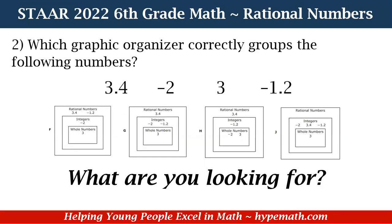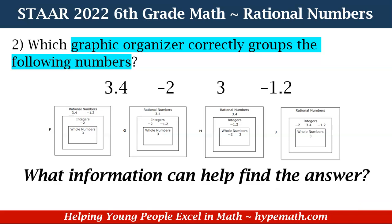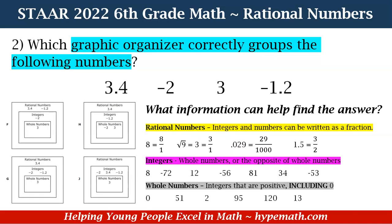What's our most important question? What are we looking for? We are looking for the graphic organizer that correctly groups 3.4, negative 2, 3, and negative 1.2. What information can help us find the answer? Understanding what rational numbers, integers, and whole numbers look like so that we can correctly answer this question. Here is a review of what rational numbers, integers, and whole numbers are — as we just went over.